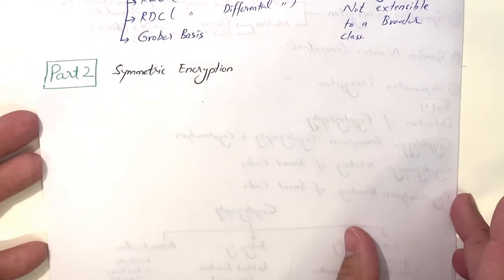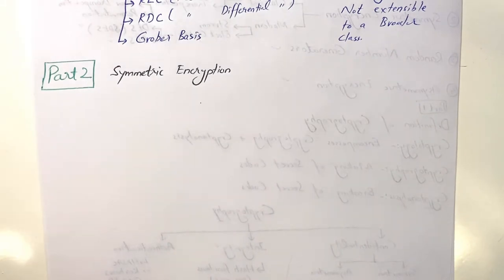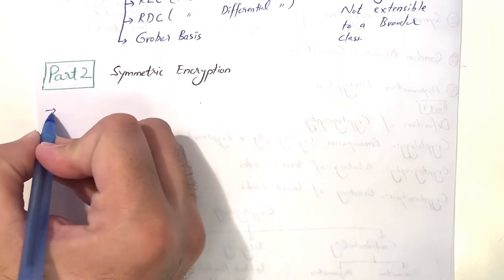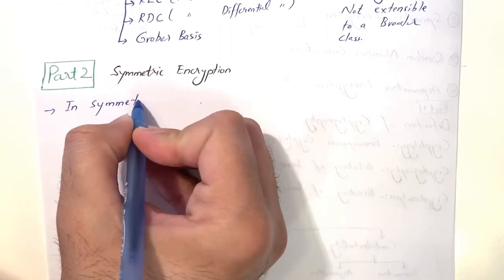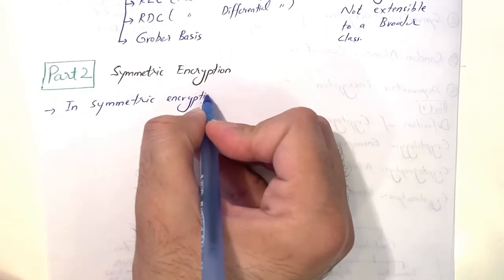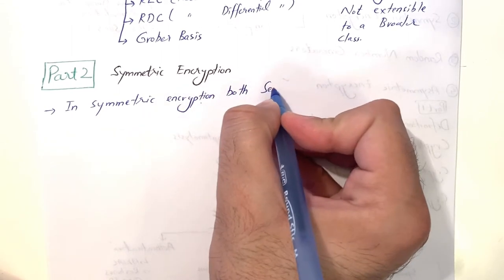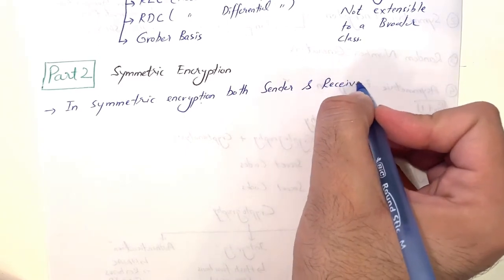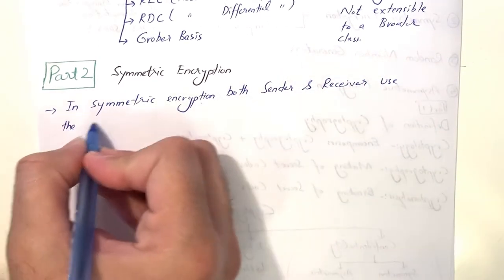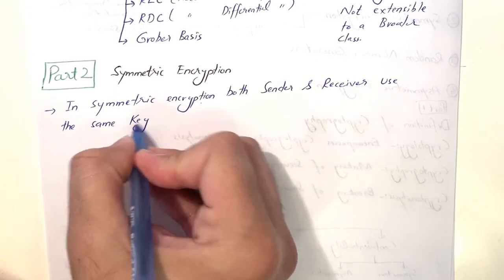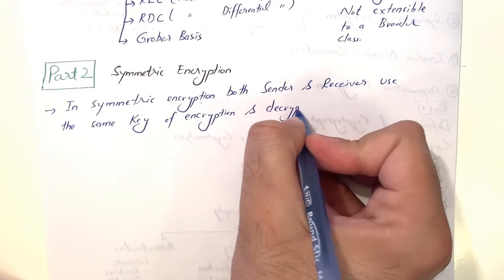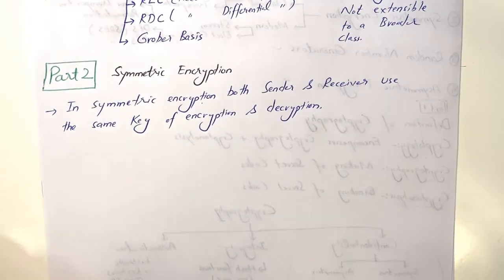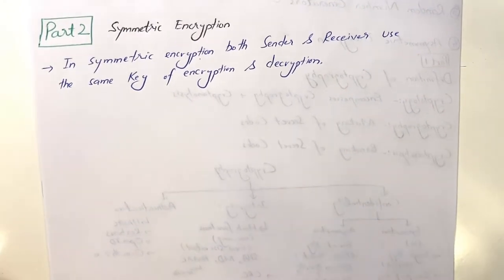Symmetric encryption definition: in symmetric encryption, both sender and receiver use the same key for encryption and decryption. There is just one key, or an identical group of keys, which sender and receiver use to encrypt and decrypt the data.